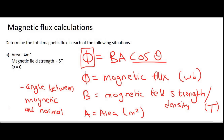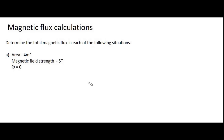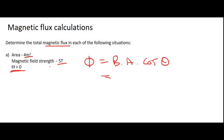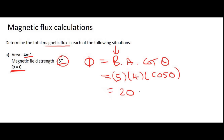Let's practice. They tell us we've got an object with an area of 4 meters squared, magnetic field strength of 5 Tesla, and theta is 0. We want to determine the magnetic flux. Using our formula: Φ = B·A·cosθ = 5 × 4 × cos0. If you put that in the calculator, you get 20 Weber. That's pretty easy.